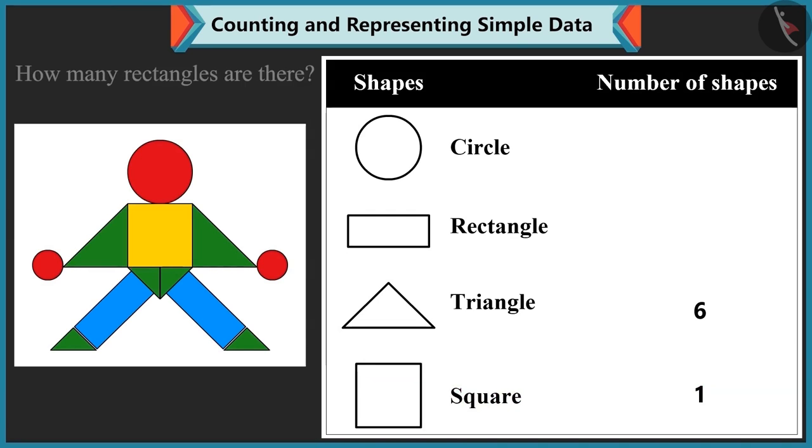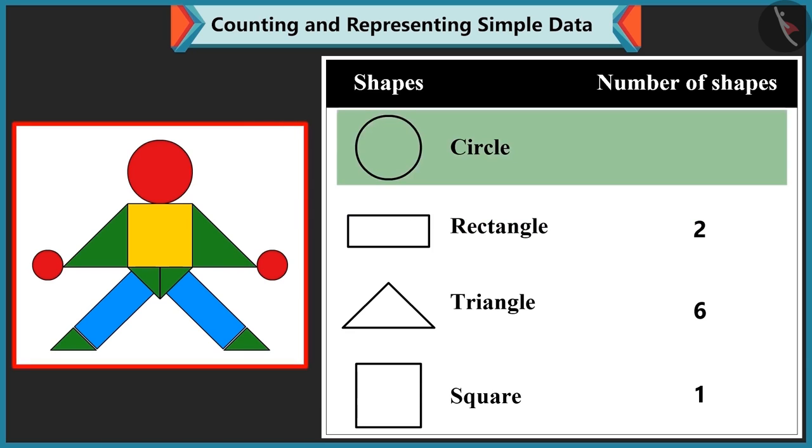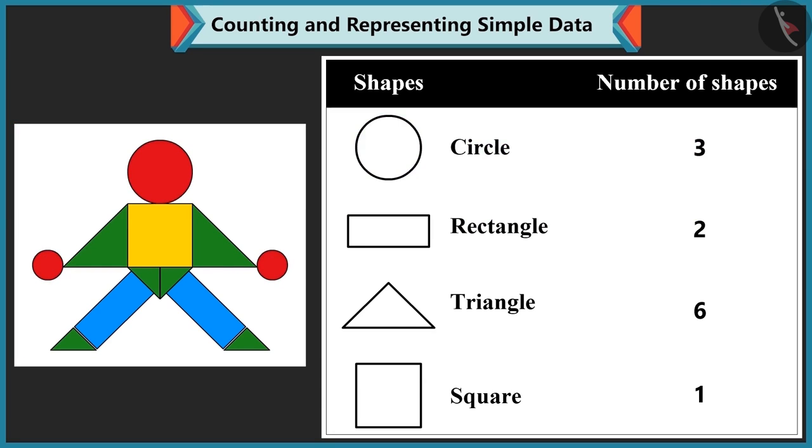Now, tell me how many rectangles are there? Rectangles are 1, 2, only 2. Absolutely perfect. Look, Mummy. There is 1, 2 and 3 circles in this picture. Well done. Now, tell me all the shapes that you had counted. I counted triangles, squares, rectangles and circles.